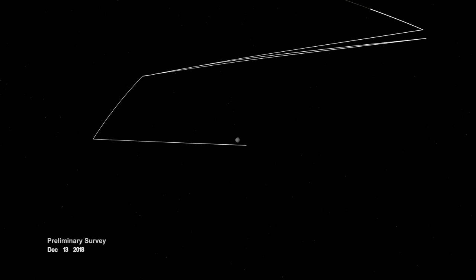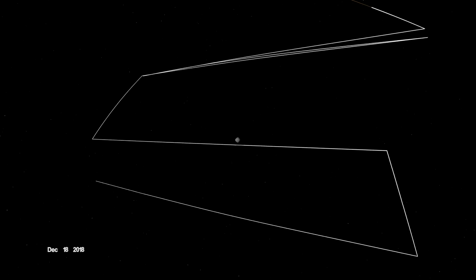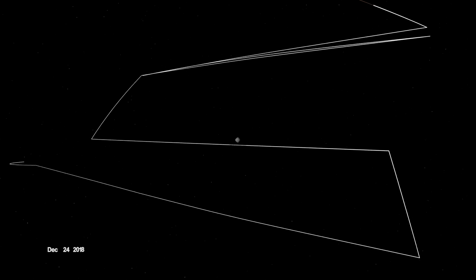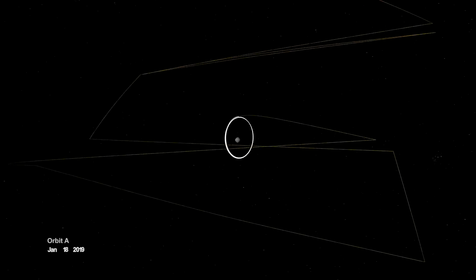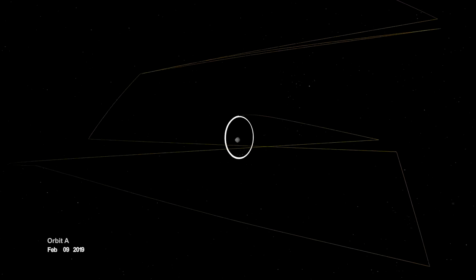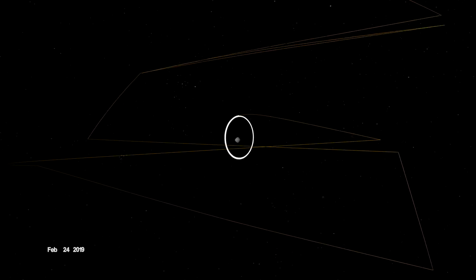When OSIRIS-REx arrived, it began wrapping Bennu in a complex web of observations, starting with a preliminary survey of its size, shape, mass, and spin. On New Year's Eve, OSIRIS-REx was captured into orbit by Bennu's minuscule gravity, making it the smallest world ever to be orbited by a spacecraft.